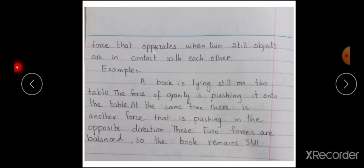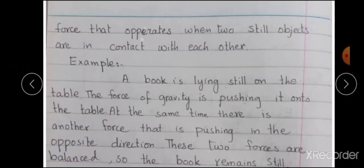Normal force کب operate کرتی ہے؟ جب دو still objects ایک دوسرے کے ساتھ contact میں ہوں۔ Table بھی still ہے اور book بھی still ہے۔ A book is laying still on the table. The force of gravity is pushing it onto the table. At the same time there is another force pushing in the opposite direction. These two forces are balanced, so the book remains still. Book table پر ہے تو gravity نیچے کھینچ رہی ہے مگر normal force اوپر کی طرف act کر رہی ہے۔